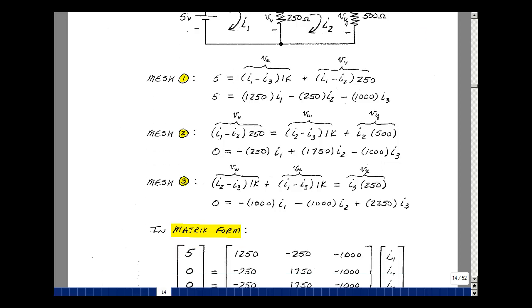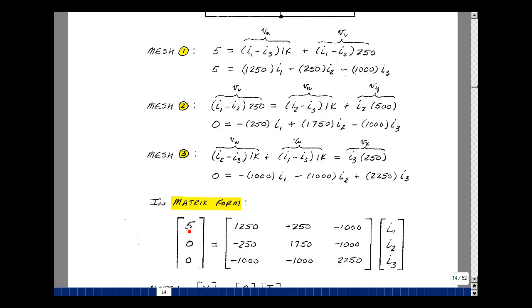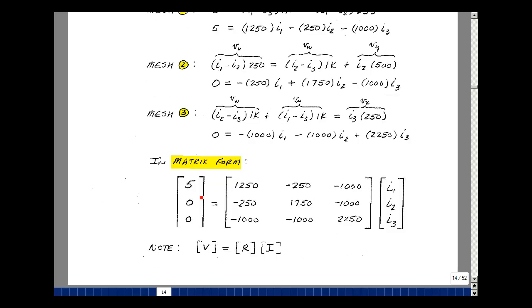Okay, we can write this in a shorthand matrix notation. It says that 5 is equal to 1250 times I1 minus 250 times I2 minus 1,000 times I3. Zero is equal to minus 250 times I1 plus 1750 times I2 minus 1,000 times I3. And lastly, zero is equal to minus 1,000 times I1 minus 1,000 times I2 and then 2,250 times I3. What we've got here is voltage on the left-hand side, current on the right-hand side, and then a matrix where all the units here are ohms. We'll call that a resistive matrix.